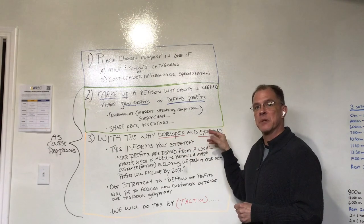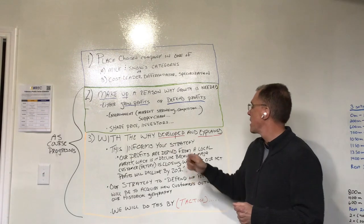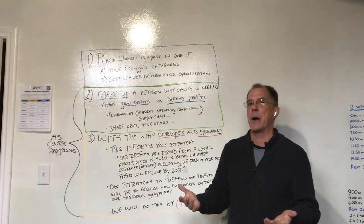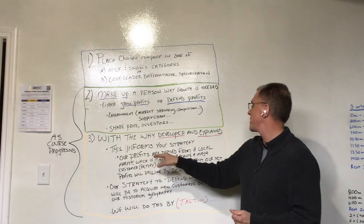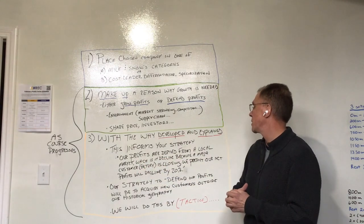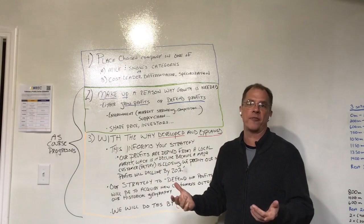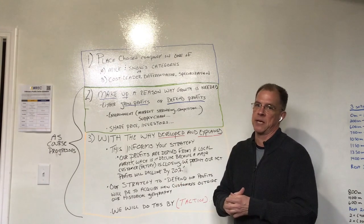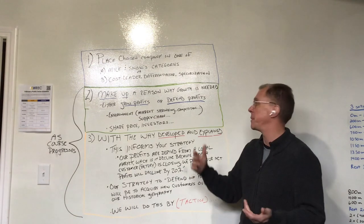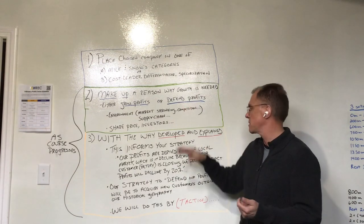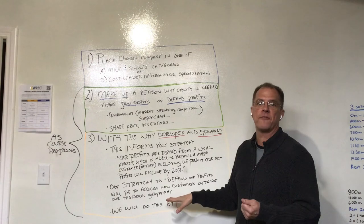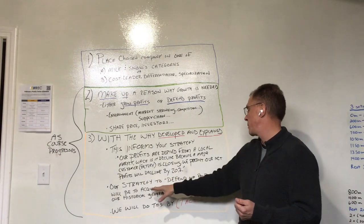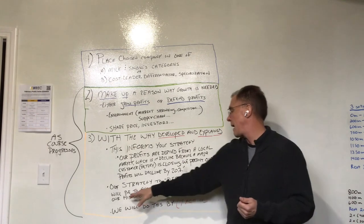That's gonna give you the strategic direction—the why. With the why developed and explained, make sure you explain it because you're not just explaining to me or explaining to yourself; this is going to inform your strategy. So an example of the statement I might write is: our profits are derived from a local market which is in decline because the manufacturer closed. We predict that our future profits will decline by 20%. So in that case I would say I'm a defender, I'm defending profits, and my strategy is gonna follow that.